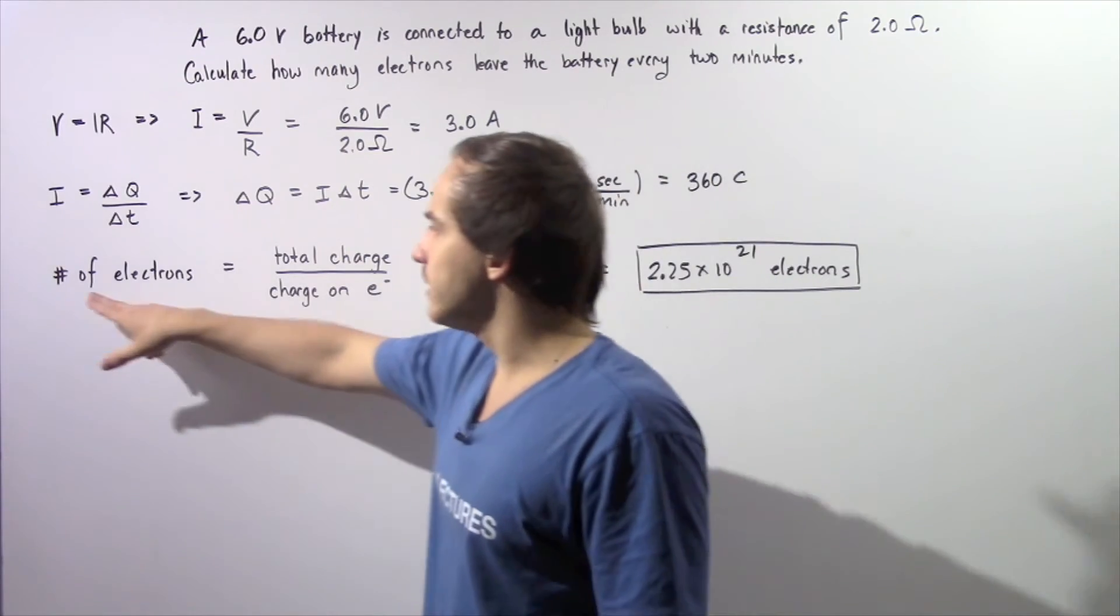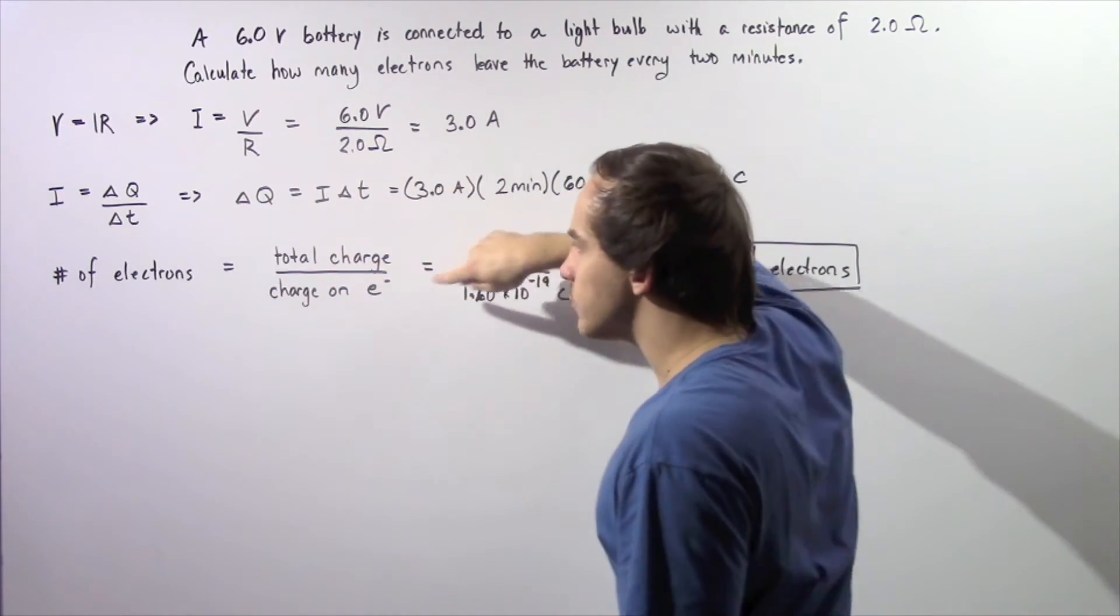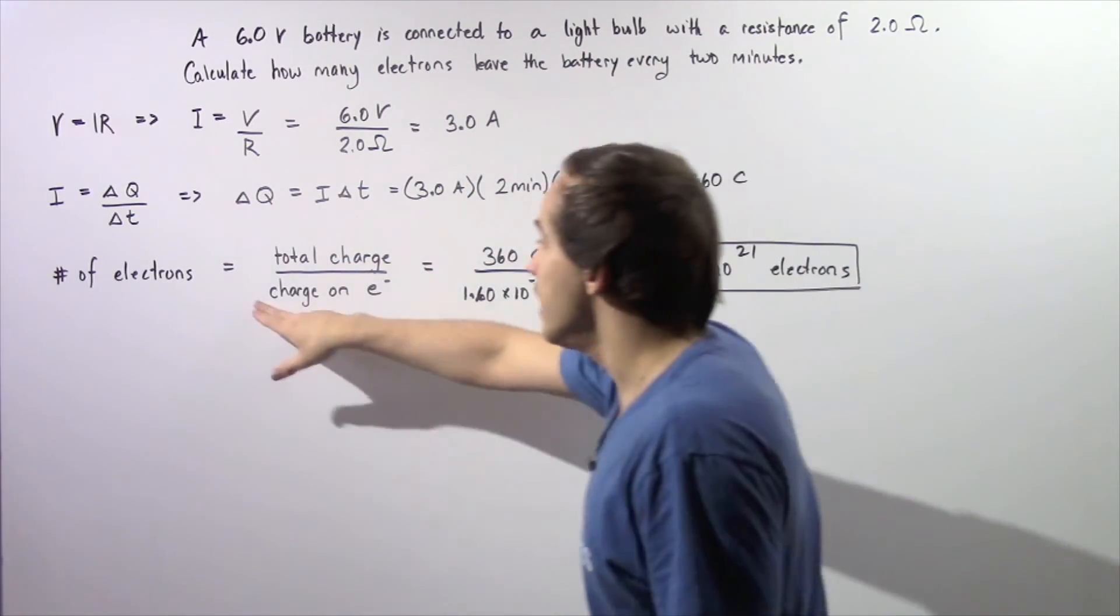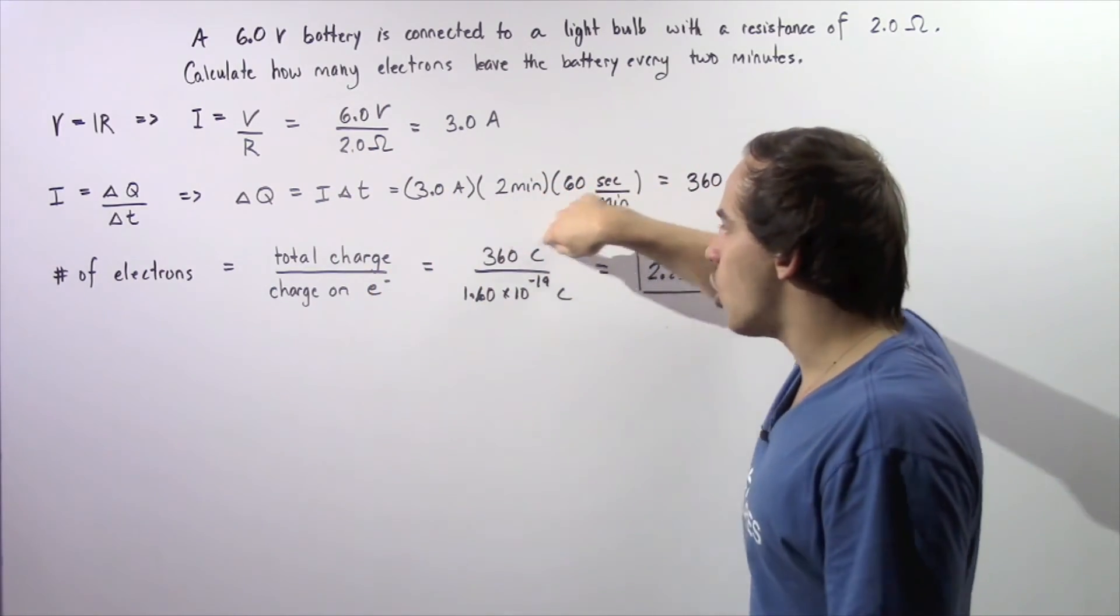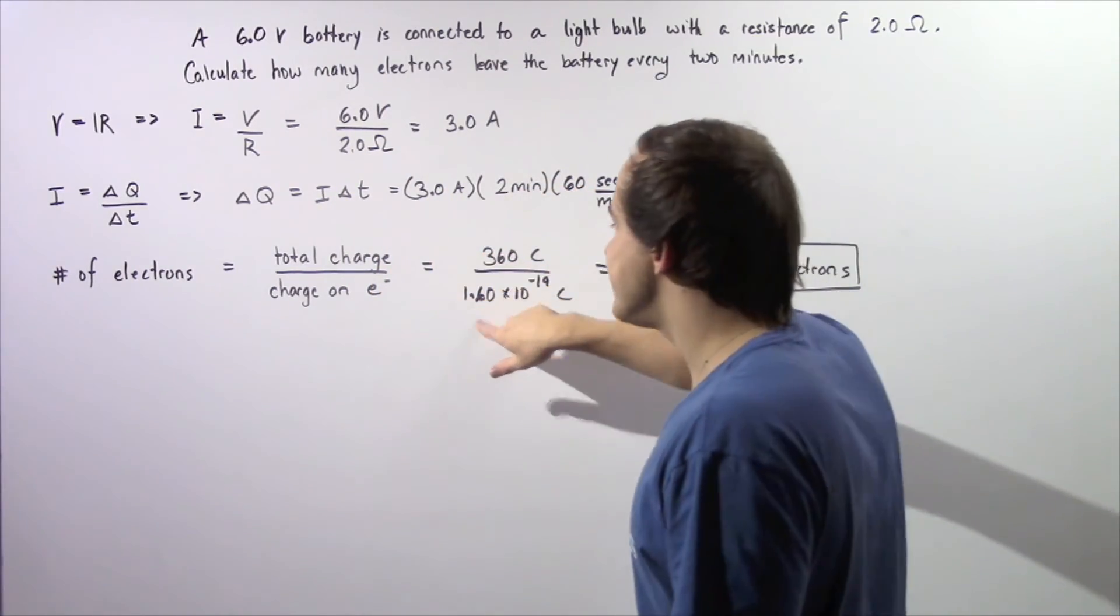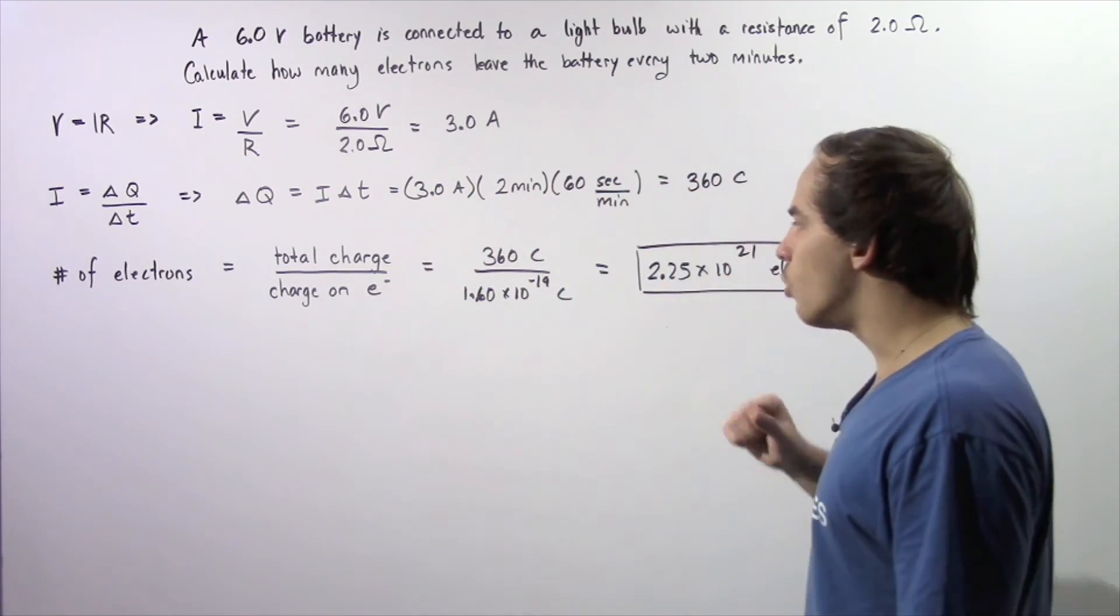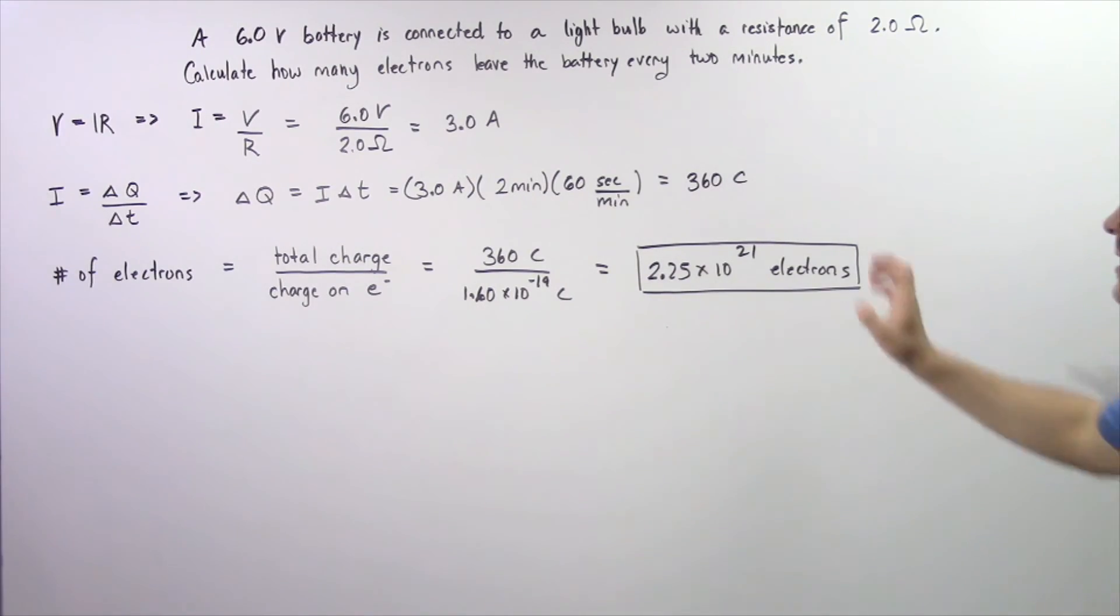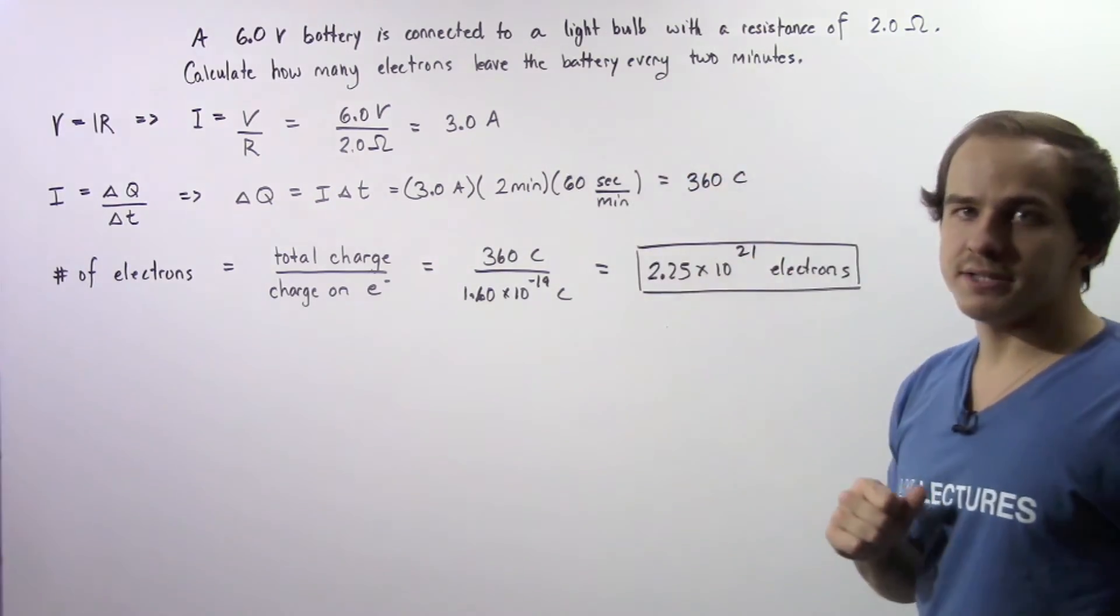Finally, we want to calculate the number of electrons. So we take the total charge which was found in this part and divide it by the charge on a single electron. So 360 coulombs divided by 1.60 times 10 to the negative 19 coulombs gives us 2.25 times 10 to the 21 electrons that leave our battery every 2 minutes.